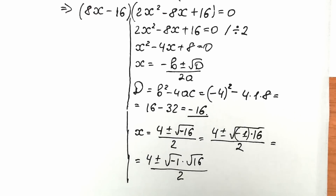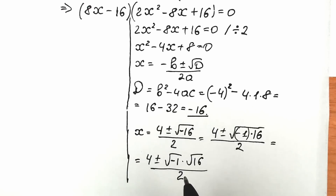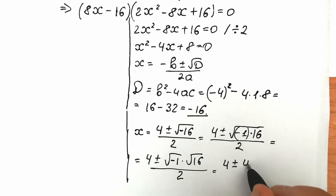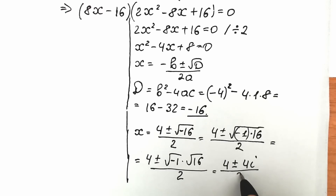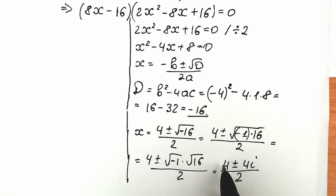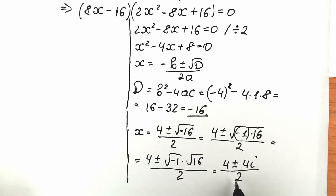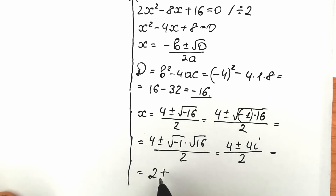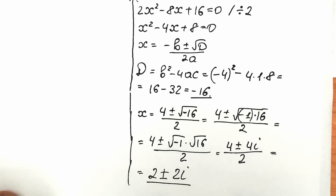Square root of 16 equals 4, and square root of minus 1 is our complex unit i. So we have 4 plus or minus 4i, all over 2. We can divide the numerator by the denominator, giving us 2 plus or minus 2i. These are our two complex roots — the second and third roots.